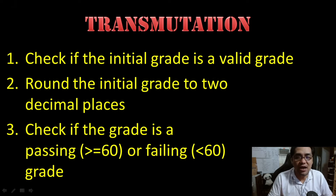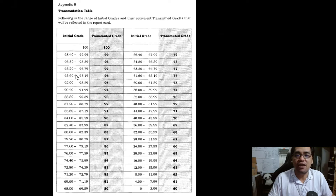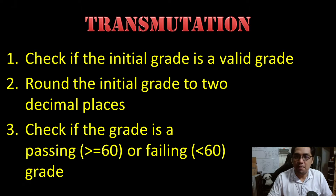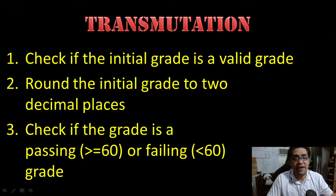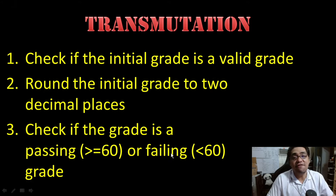Step number two, you have to round the initial grade to two decimal places. If you notice the transmutation table, all of the initial grades are rounded to two decimal places. So after you combine your written work, your performance task, and your quarterly assessment grades, whatever the result is, you have to round that off to two decimal places. Next, you have to check if the grade is a passing initial grade — greater than or equal to 60 — or a failing initial grade if it is less than 60.